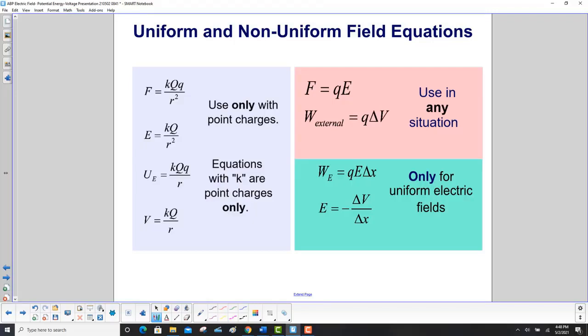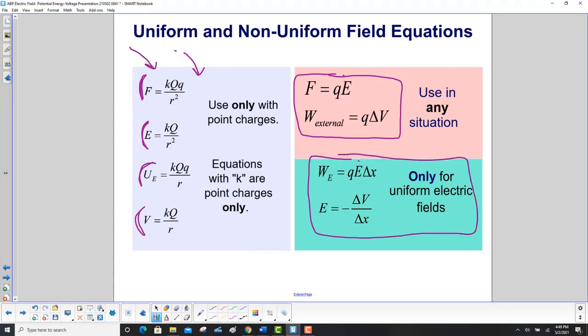Let's wrap up the equations we've used for uniform and non-uniform electric fields. The ones on the left we summarized earlier, these are the big four. And these are used only with point charges. Equations with k in them are for point charges only. You can have one point charge, two point charge, three point charges, but as long as you have a very small number of them you can work with these. So the force, Coulomb's law, the electric field, the potential energy, and the electric potential or voltage. Then we can use these equations in any situation: F is equal to qE, or work done by an external force is q delta V. And then finally, for uniform electric fields, we can use the work done by the electric field is qE delta x, and the electric field is equal to minus delta V over delta x.